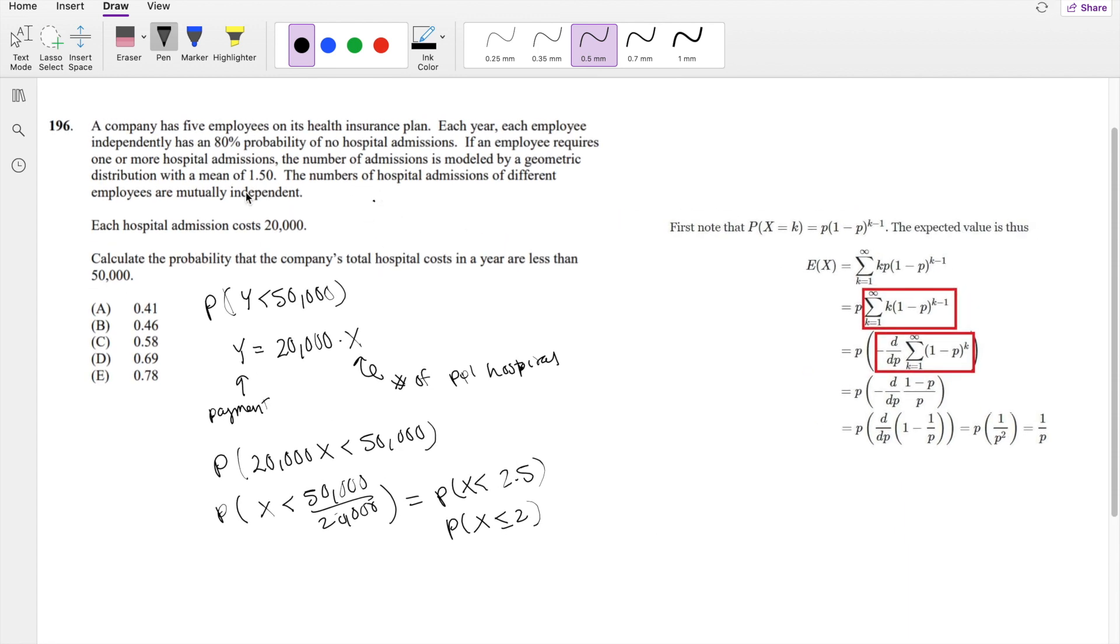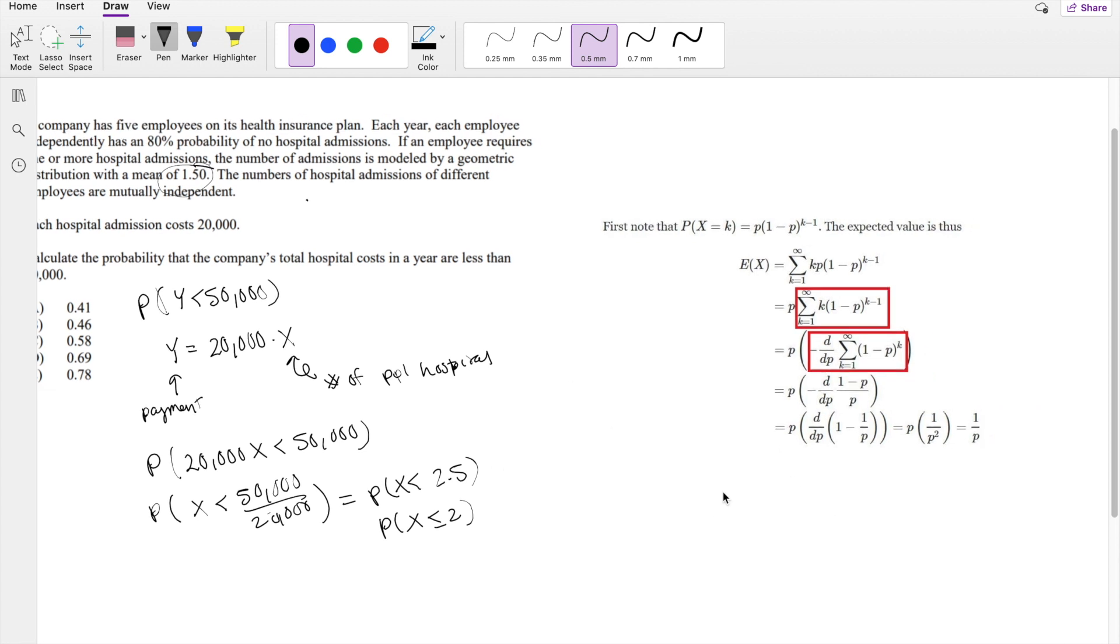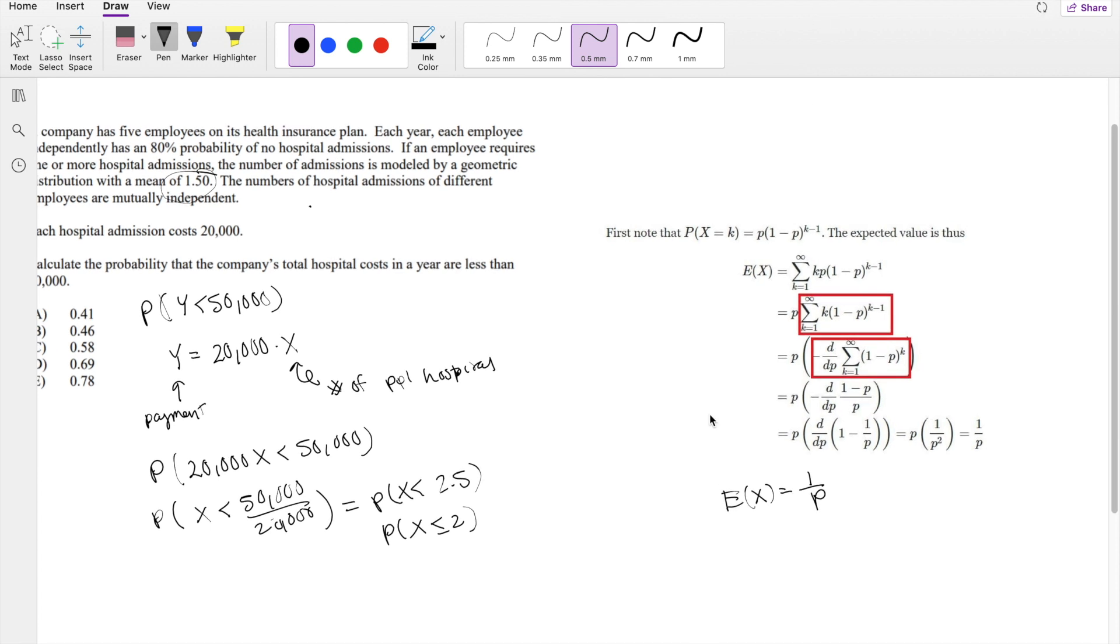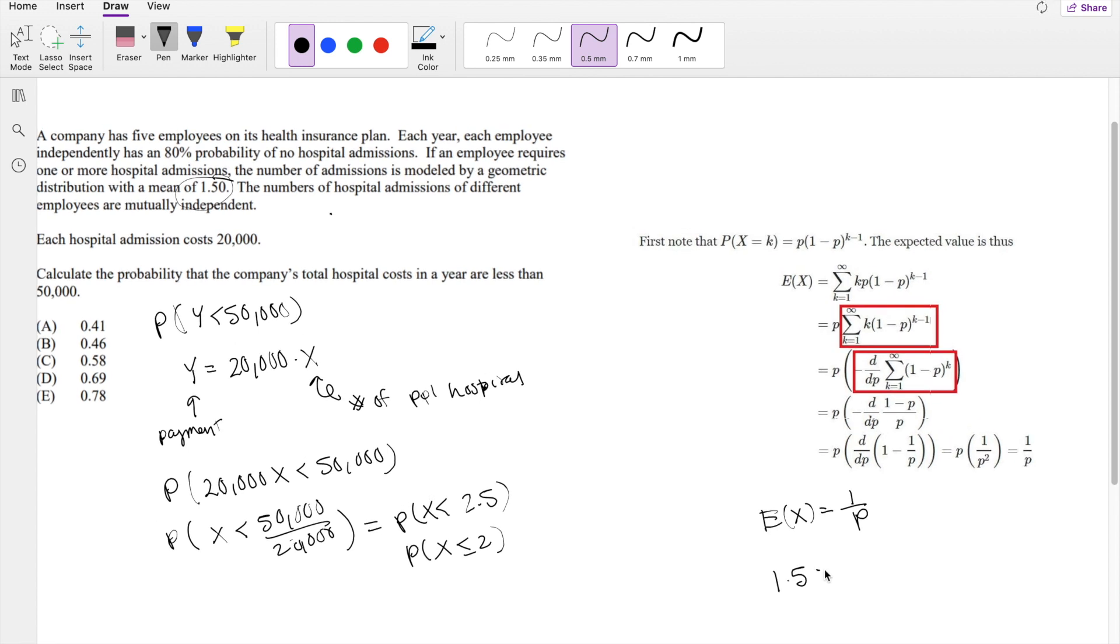They give you that this is a geometric distribution with a mean of 1.5. If we know that the mean is 1.5, we know the expectation of a geometric function is 1 over P. And they give you that the mean equals 1.5 equals 1 over P. So the probability is just 1 over 1.5, which equals 2/3.